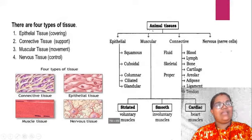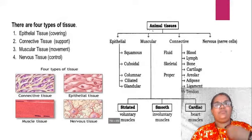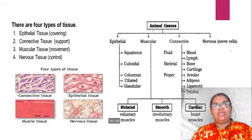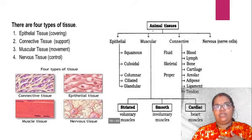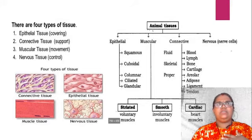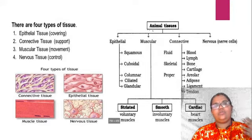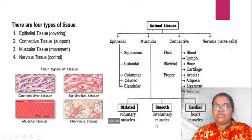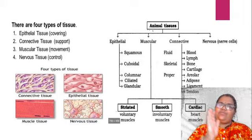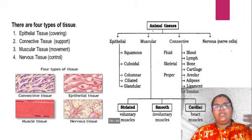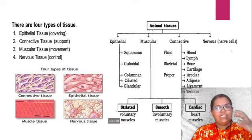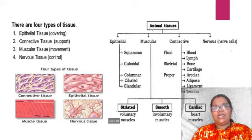There are some smooth muscles, or involuntary muscles, where involuntary actions are happening, like in digestion. When we take food, digestion occurs automatically — it's not in our control. So that's called involuntary muscles or smooth muscles. The other one is cardiac muscles, which throughout life — from birth to death — will continuously beat. Such types of muscles are included in cardiac muscles.